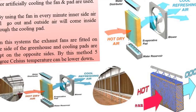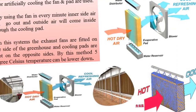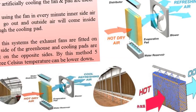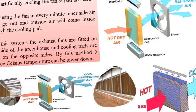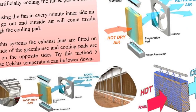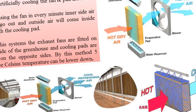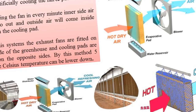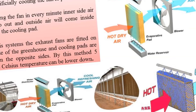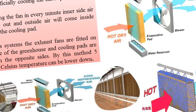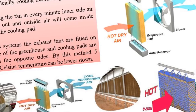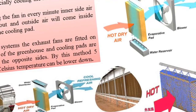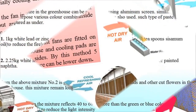For artificial cooling, generally a fan and pad type of system is used. By using fans, inside air goes outside every minute and outside air comes inside through the cooling pad. In this method, exhaust fans are fitted on one side of the greenhouse and cooling pads are kept on the opposite side. This method helps to reduce temperature by 5 degrees Celsius inside the polyhouse compared to outside climatic conditions.